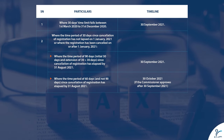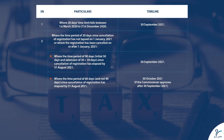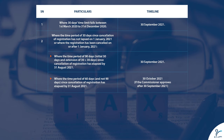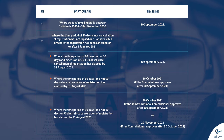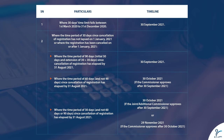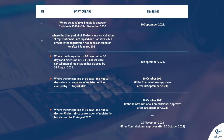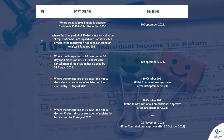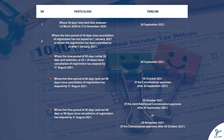Case four — where the time period of 60 days (and not 90 days) since cancellation of registration has elapsed by 31 August 2021, the timeline is 30 October 2021 if the Commissioner approves after 30 September 2021. Case five — where the time period of 30 days (and not 60 or 90 days) since cancellation of registration has elapsed by 31 August 2021, the timeline is 30 October 2021 if the joint/additional Commissioner approves after 30 September 2021, or 29 November 2021 if the Commissioner approves after 30 October 2021.